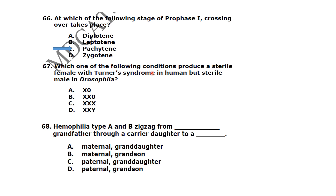Which one of the following conditions produces a sterile female with Turner syndrome in humans but a sterile male in Drosophila? It is the XO condition. Hemophilia type A and B shows a zigzag pattern of inheritance — from maternal grandfather to a carrier daughter to a grandson.